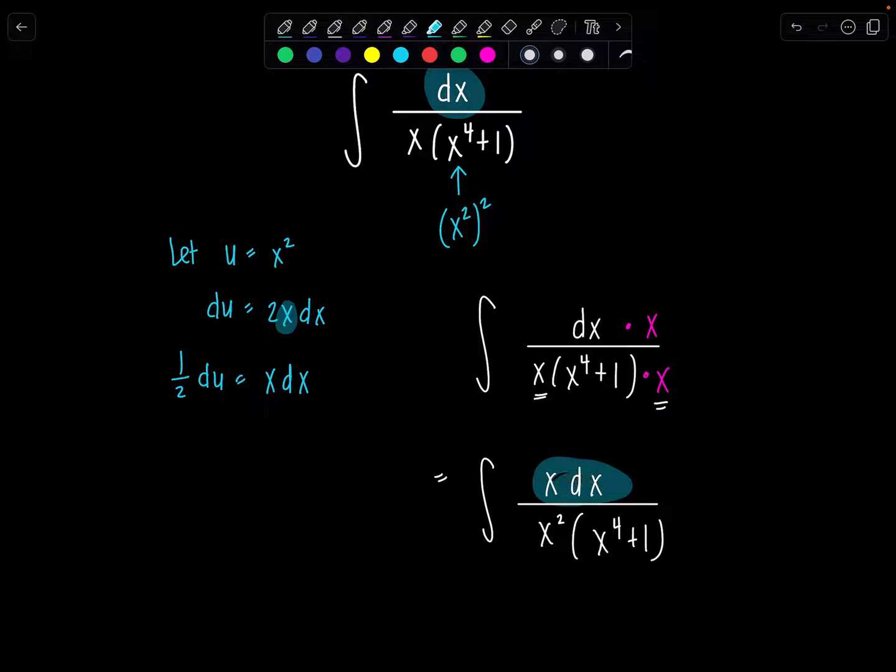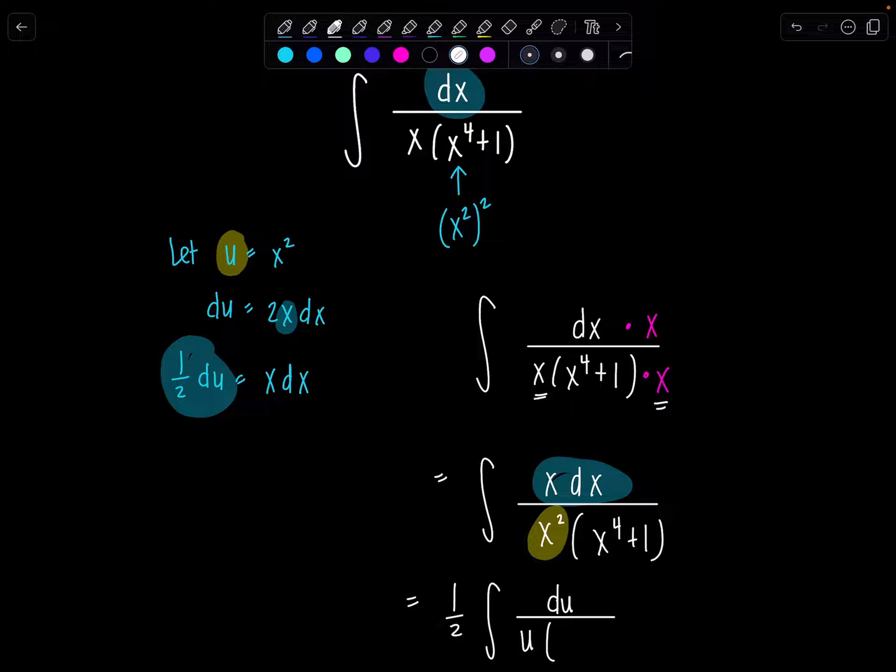So this x dx right here is 1 half du. And you know how I love to pull the constants outside. So let's do that. 1 half du now in the numerator. And then this x squared is u. Wow, that worked out well. And then x to the fourth, that's u squared plus 1. So now let's take a look at what we've done.